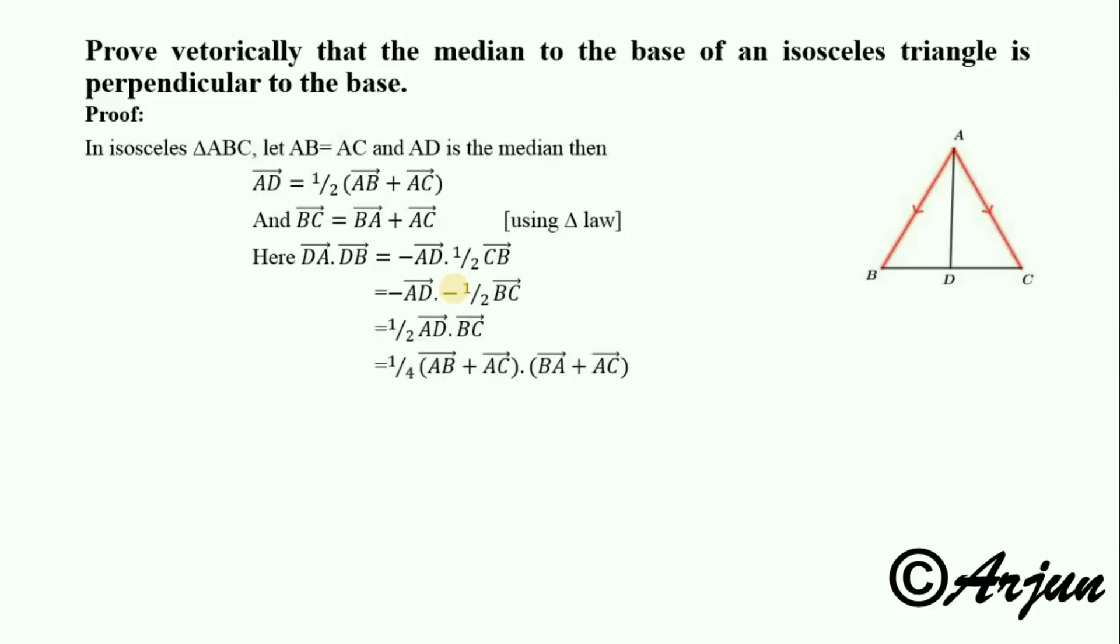Now substituting values, one-half times one-half gives one-fourth. AD equals BA plus AC, and BC equals BA plus AC. So we have one-fourth times AB plus AC times AC equals BA plus AC.